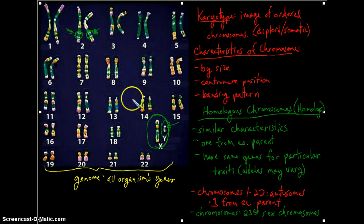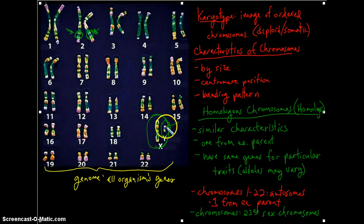So chromosomes 1 through 22, the autosomes, have no determination on sex and are homologous. And the 23rd pair may not be homologous, and they do contain genes that determine an organism's sex.